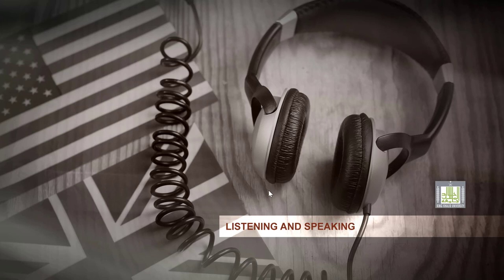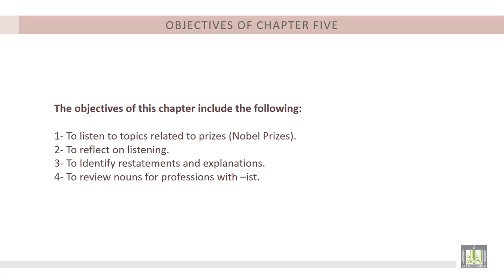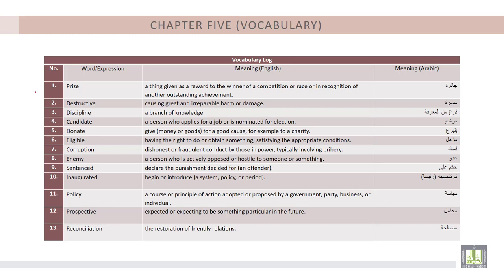Listening and Speaking for Level 4 Students, Chapter 5. The objectives of this chapter include the following: 1. To listen to topics related to prizes and Nobel Prizes. 2. To reflect on listening. 3. To identify restatements and explanations. 4. To review nouns for professions with -IST. The vocabulary log of this chapter includes the following: